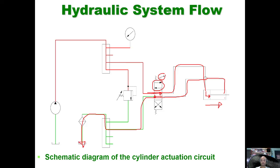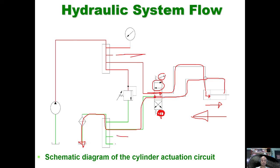To return the piston to its original position, you would need actuation on the other side of the directional valve. As shown, this hydraulic system flow diagram is still incomplete — you can still add components to improve the circuit.